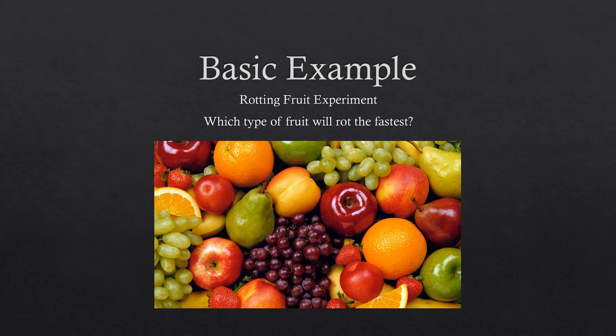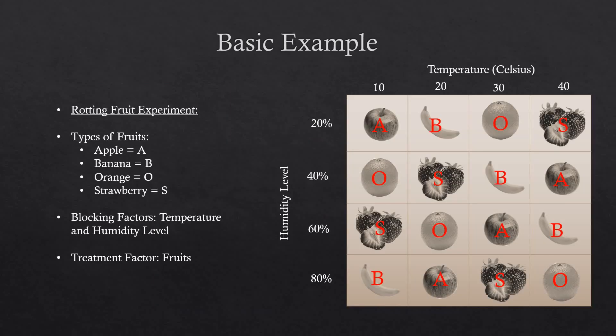To get a better understanding of Latin squares, we can consider a basic example. Imagine that you are a scientist trying to answer the question of which type of fruit will rot the fastest. In this experiment, we are considering four types of fruit: apples, bananas, oranges, and strawberries. Our blocking factors for this experiment are the temperature and humidity level, because we are only interested in testing which type of fruit will rot faster. Our treatment factor in this case is the types of fruit.